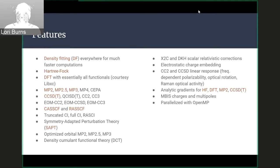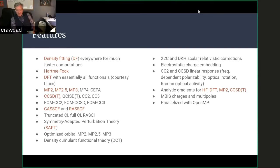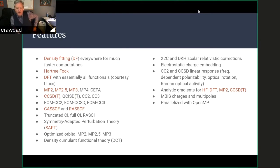There are just so many different features to go through, including relativistic corrections, charge embedding, coupled cluster linear response, and quadratic response that we hope will be available soon. Linear response for frequency-dependent properties such as polarizability, optical rotations, Raman optical activity, and spectra. We have analytic gradients for so many of these methods, including all those density functionals, perturbation theory, and coupled cluster methods. MBIS charges and multipoles recently, and many components are shared memory parallelized with OpenMP.